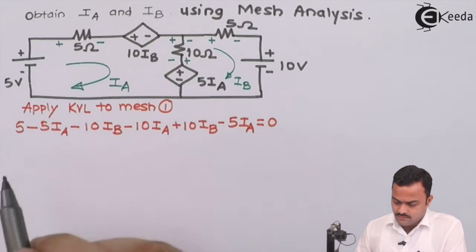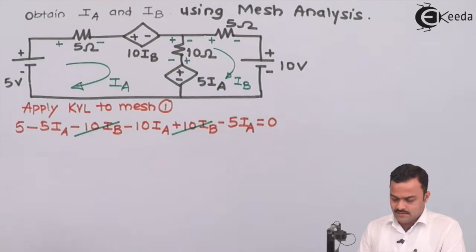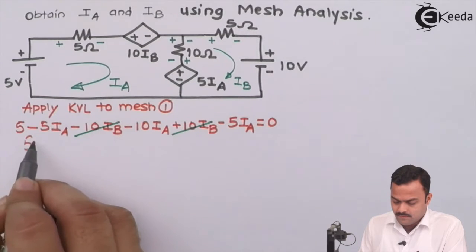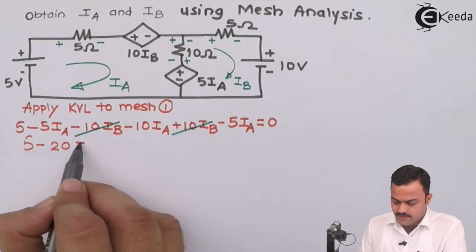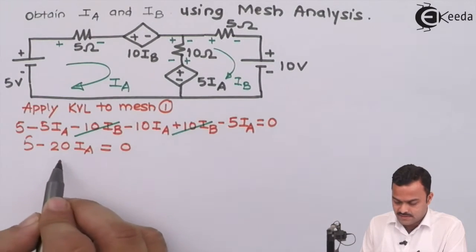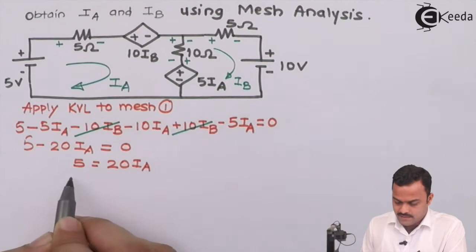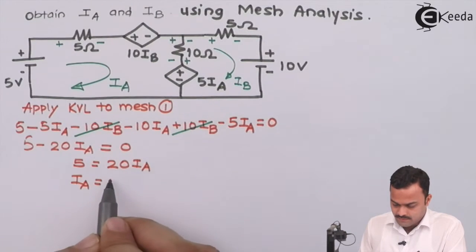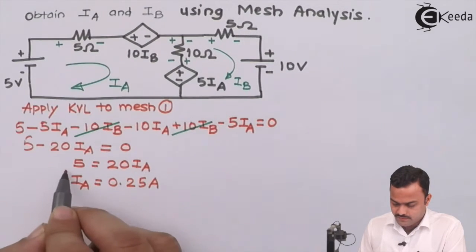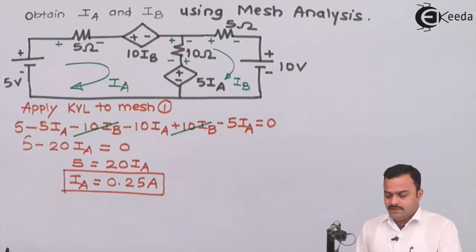If you see carefully, minus 10·Ib and plus 10·Ib cancel out. Then minus 5·Ia minus 10·Ia minus 5·Ia gives minus 20·Ia. So in the end: 5 = 20·Ia, and Ia = 5/20 = 0.25 ampere. A very straightforward answer for Ia. Now let's apply KVL to Mesh 2.